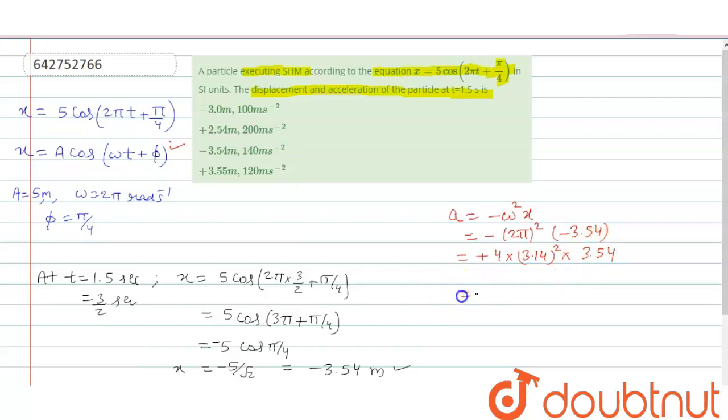So after multiplying all these terms, it becomes 140 meter per second square. So acceleration will be this much and displacement will be this much. So we can say that option number 3 is correct.